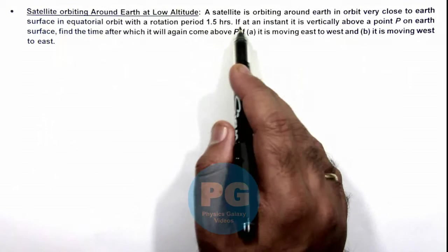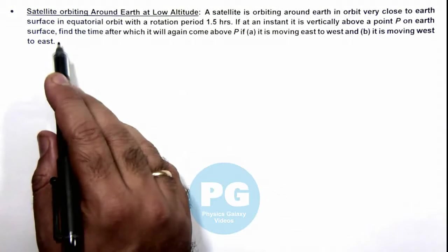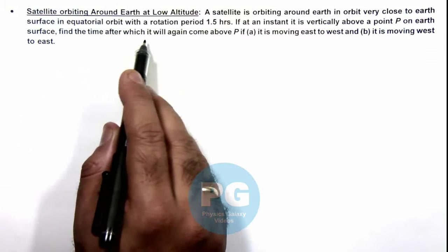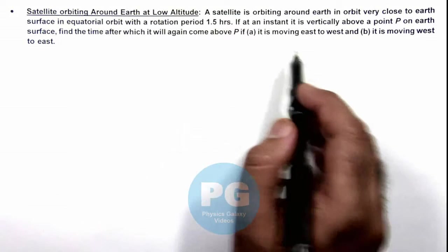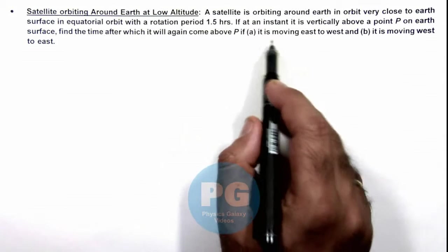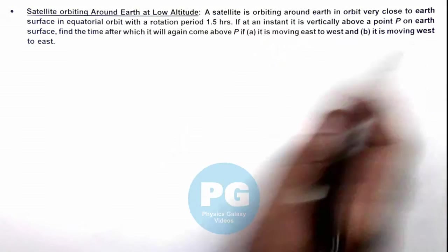It is saying if at an instant it is vertically above a point P on Earth's surface, we are required to find the time after which it'll again come above point P. There are two cases we'll be analyzing: first when it is moving east to west and other when it is moving west to east.